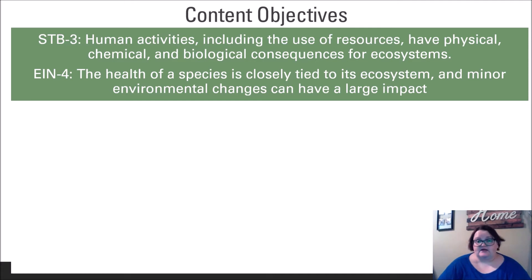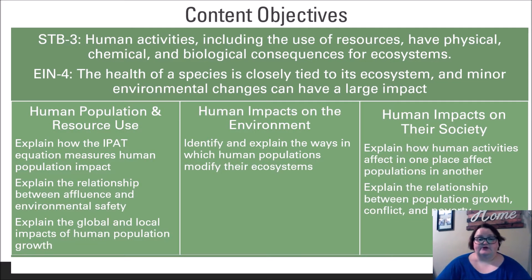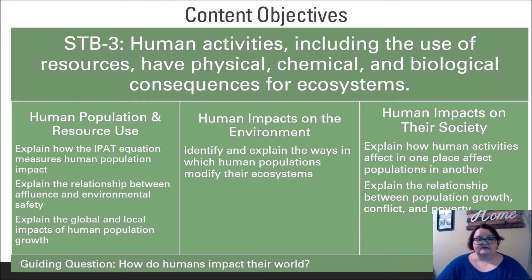Here are our content objectives for this lesson: human activities, including the use of resources, have physical, chemical, and biological consequences for ecosystems. The health of a species is closely tied to its ecosystem, and minor environmental changes can have a large impact. By the end of this lesson you should be able to explain how the IPAT equation measures human population impact, explain the relationship between affluence and environmental safety, explain the global and local impacts of human population, identify and explain the ways human populations modify their ecosystems, explain how human activities in one place affect populations in another, and explain the relationship between population growth, conflict, and poverty. This leads us to our guiding question: how do humans impact their world?